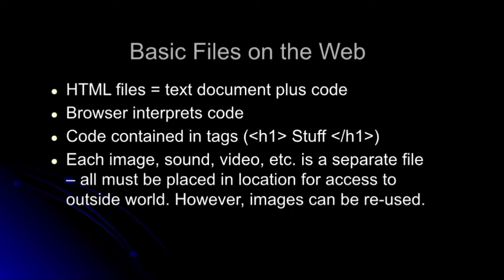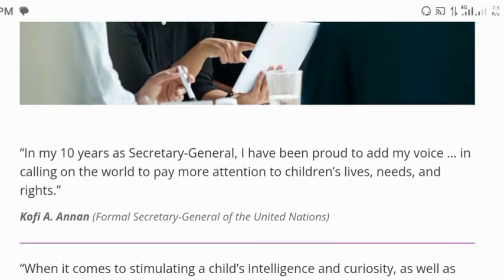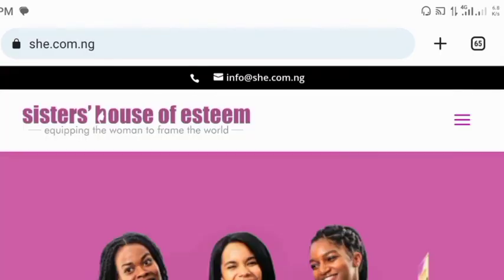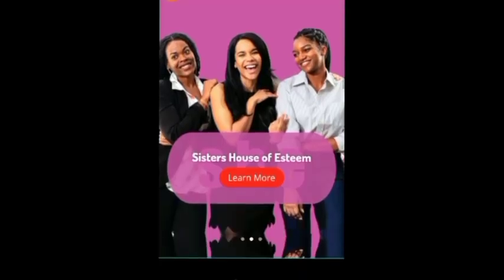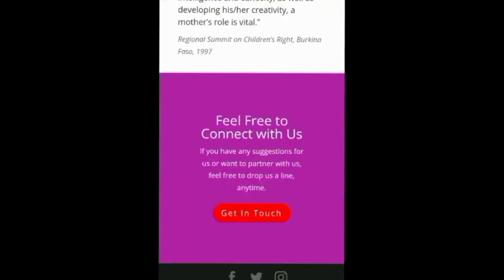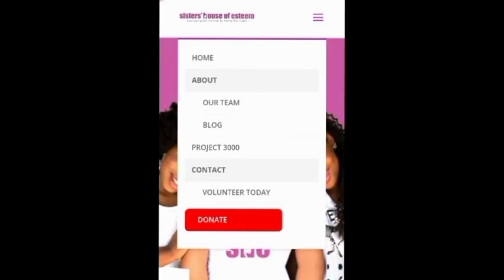Now, basic files on the net: we have the HTML file, the text document plus code, the browser interprets the code, and the code is contained in tags — plus images, sound, videos, and all that. For image file types, you can have GIF, JPEG, PNG, and more. You can see the kind of site you're going to design with this course — it's not just a desktop site. If you turn it around, it is completely mobile-friendly. It is a fully responsive site — a site that fits into different interfaces.